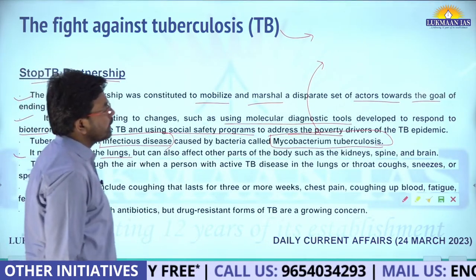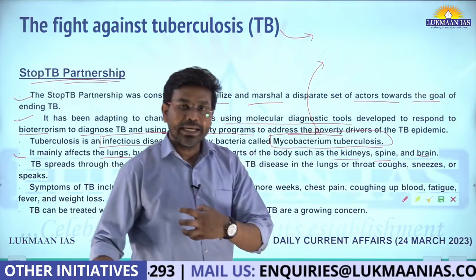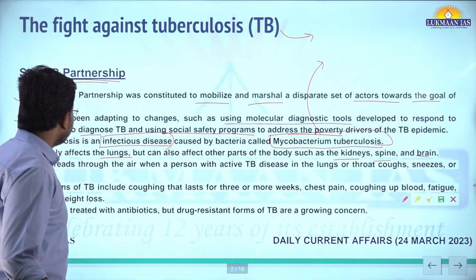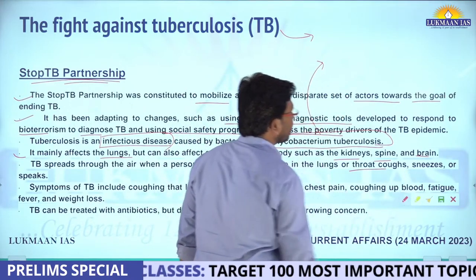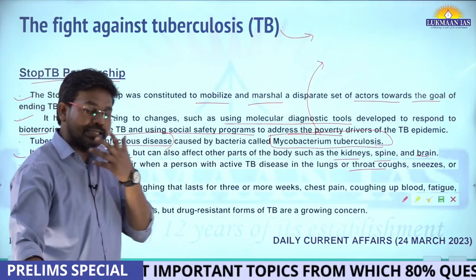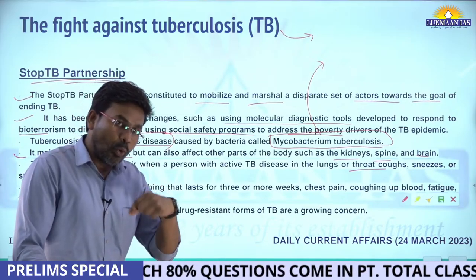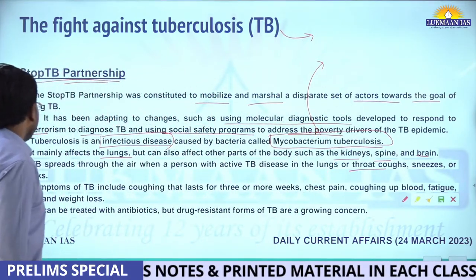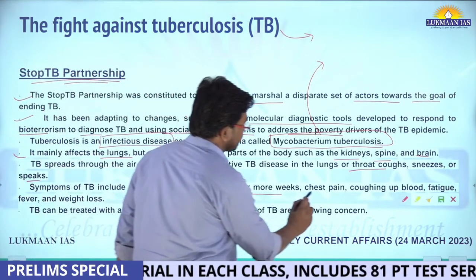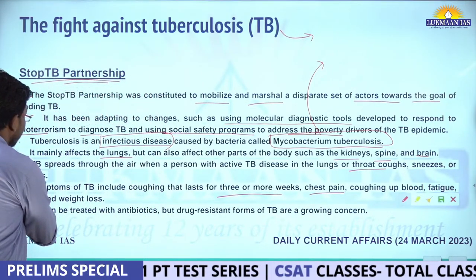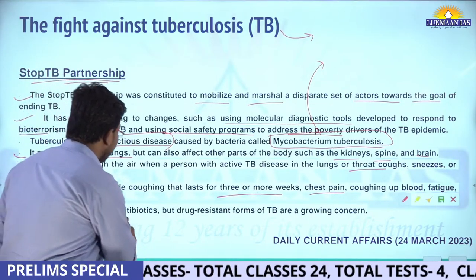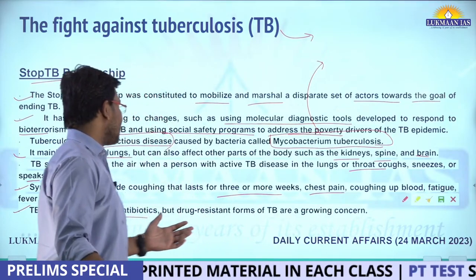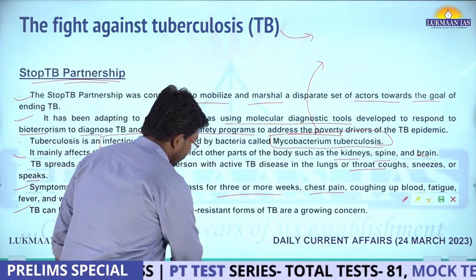TB spreads through the air when a person with active TB in the lungs or throat coughs, sneezes, or speaks. Symptoms include coughing lasting 3 or more weeks, chest pain, coughing up blood, fatigue, fever, and weight loss. TB can be treated with antibiotics, but there are concerns about rising instances of drug-resistant forms, where the body stops responding to antibiotics and drug-resistant bacteria develop.